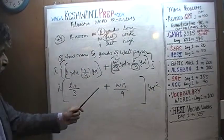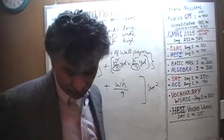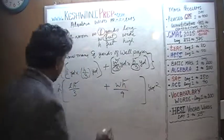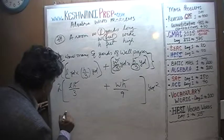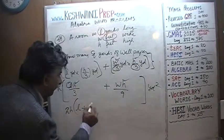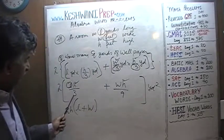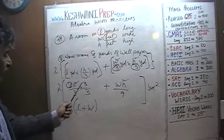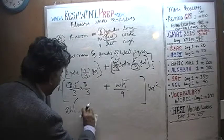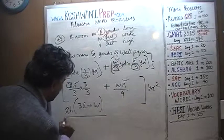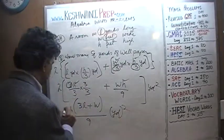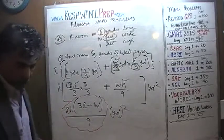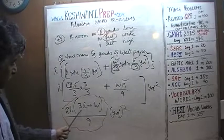We can't leave it in such an ugly form — we need to simplify. H is a common factor in both terms, so we factor it out: 2 times H, leaving L over 3 plus W over 9. To combine these fractions, multiply L over 3 top and bottom by 3 to get 3L over 9. So the expression becomes 2 times H times 3L plus W over 9 square yards. That is your final answer.